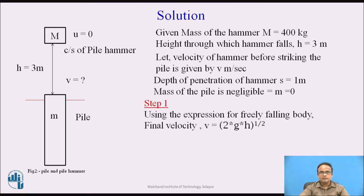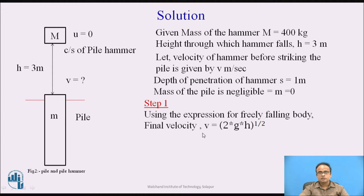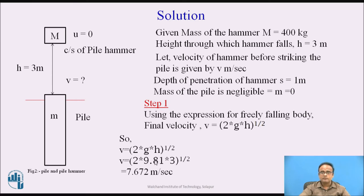Step 1: Using the expression for a freely falling body. We use v² − u² = 2gh. Taking initial velocity u = 0, we get v = √(2gh). Here h is the height of the pile hammer from the pile and g is acceleration due to gravity. Putting g = 9.81 and h = 3 meters, we get the velocity v of the hammer before striking the pile.